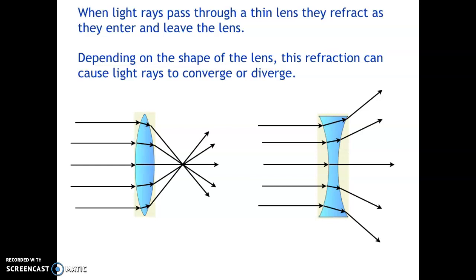Collectively, this bending causes light rays to converge for this type of lens and to diverge for this shape of lens.